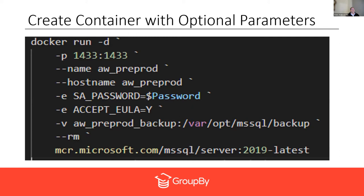There's also a volume command, creating a volume called 'aw-pre-prod-backup' and mapping the location inside the container — that's the path you'll use in SQL Server restore commands. The '--rm' parameter means when you stop this container, it automatically deletes itself. But anything in the volume persists. That's the real trick with Docker: any data you want to keep goes in a volume, not inside the container, because the container is ephemeral.